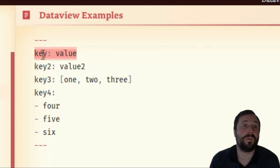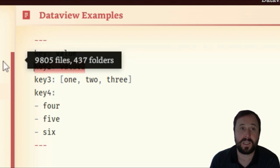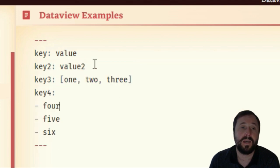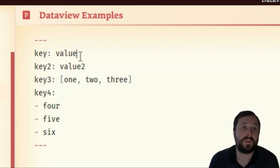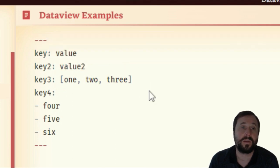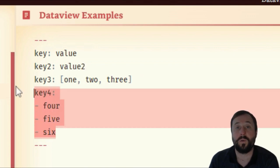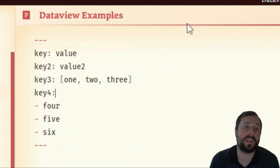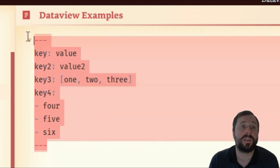What we have here is a couple of variables. Key is a variable, key two is a variable, key three is a variable, and key four is a variable. This is just showcasing — I've taken this from the official Obsidian demo — how different variables work. Key equals value, key two equals value two. Key three equals one, two, three. And key four equals four, five, six. Just some different ways of managing that. It's important to understand this here because what we're going to move into next uses this extensively.